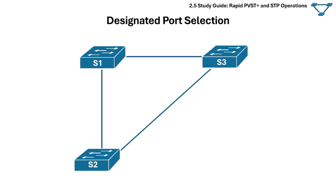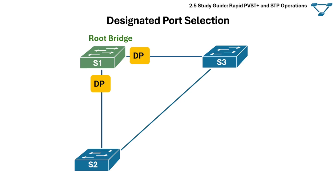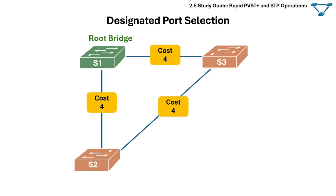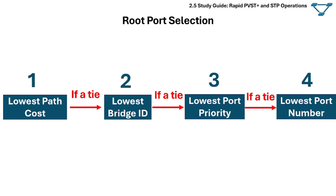Next is designated port selection. On each network segment, one port is selected as the designated port — the port allowed to send and receive traffic and forward BPDUs. All ports of the root bridge are designated ports because it generates configuration BPDUs. Every other non-root switch initially assumes all its ports that are not the root port are designated ports. When two or more switches have the same path cost, STP uses a tie-breaker system for designated ports with four rules, same as those used when selecting a root port.